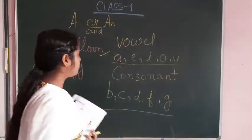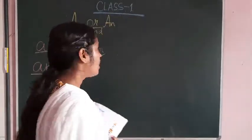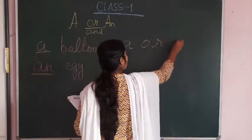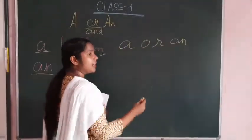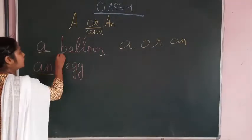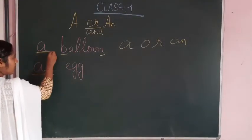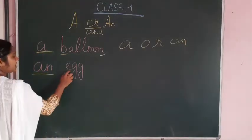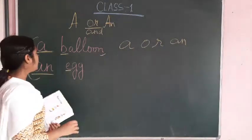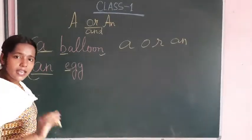Now there is one rule. You have to follow it while using A and An. The rule is before putting A or An, you have to see the third letter or second letter, whether it is consonant or vowel. If I have written here balloon, B is here. So B is what? Consonant. Then we will use A over here. A balloon. Now after that, E is a vowel. We are using An here.